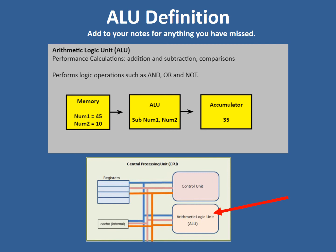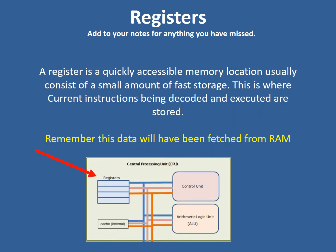Any results from the ALU are stored in the accumulator, and this is one of our registers. Registers are a different part of the CPU and we'll come on to those shortly. A register is a very small amount of memory — a memory location — but it's very very fast, and this is where the current instructions that we are decoding and executing are stored. Any data which has been fetched from RAM will be held in our registers as well. We'll learn about the different registers in the next lesson.